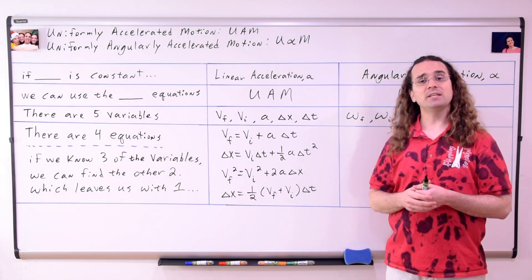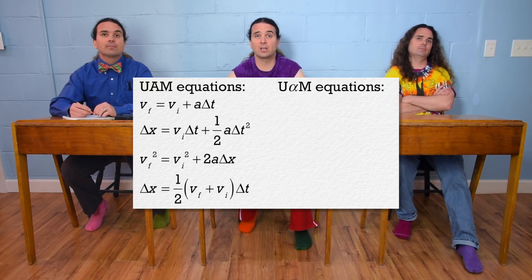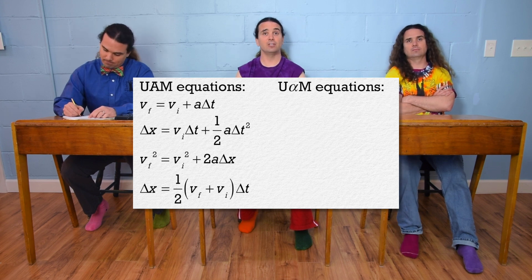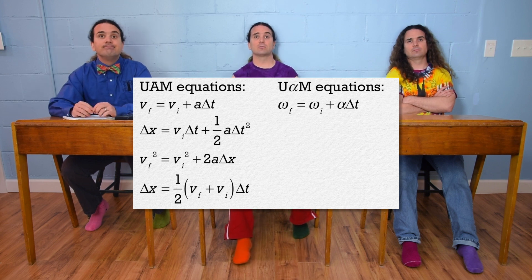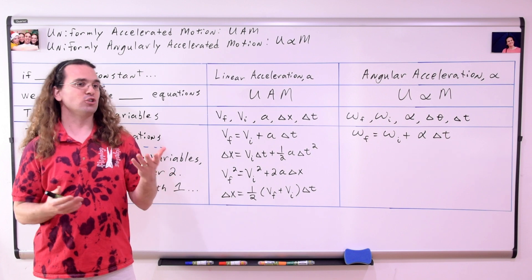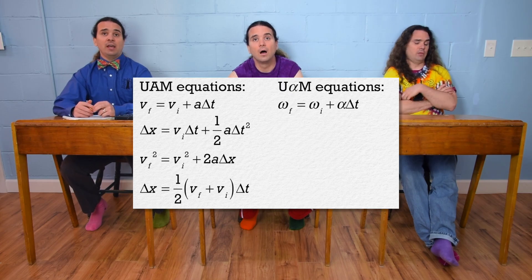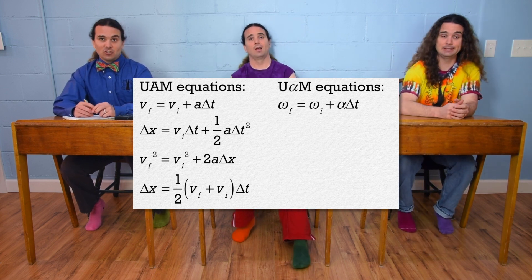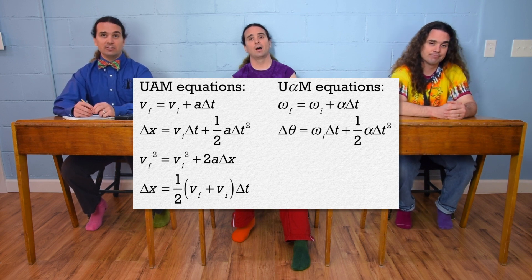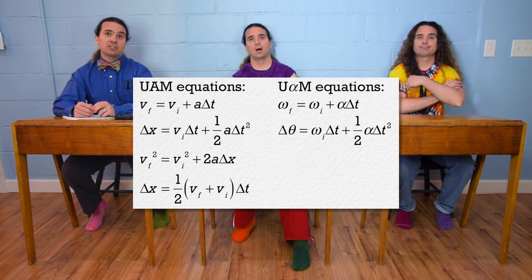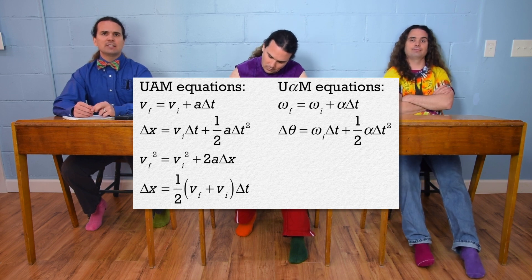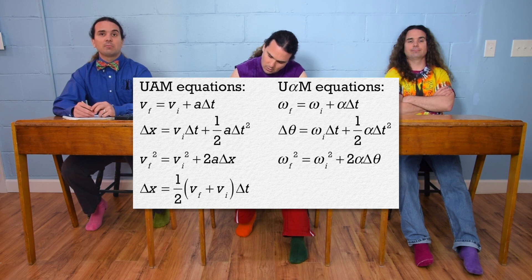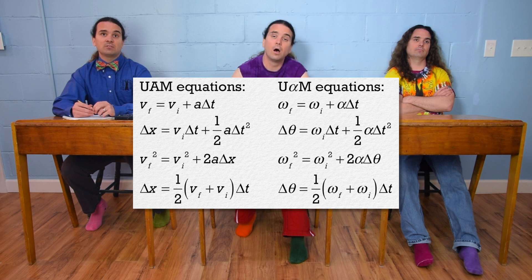Mr. P.: Bobby, please determine the first of the U-Fishy-M equations. Bobby: Looking at the first UAM equation, the first U-Fishy-M equation must be: angular velocity final equals angular velocity initial plus angular acceleration times change in time. Mr. P.: And Billy, what about the other three Uniformly Angularly Accelerated Motion equations? Billy: The second is change in angular position equals angular velocity initial times change in time plus one-half angular acceleration times change in time squared. The third is angular velocity final squared equals angular velocity initial squared plus two times angular acceleration times change in angular position. The fourth is change in angular position equals one-half times the quantity angular velocity final plus angular velocity initial, all times change in time.